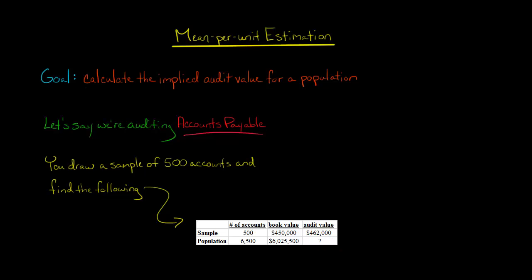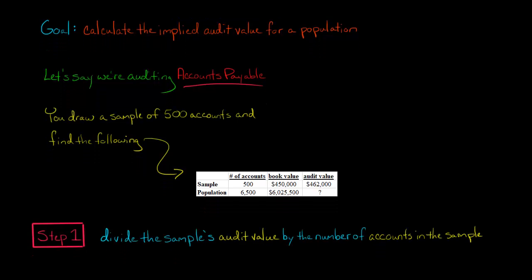So we've got a two-step procedure with mean per unit estimation. First, we're going to take the sample's audit value, which is $462,000, and then we're going to divide it by the number of accounts in the sample, 500.